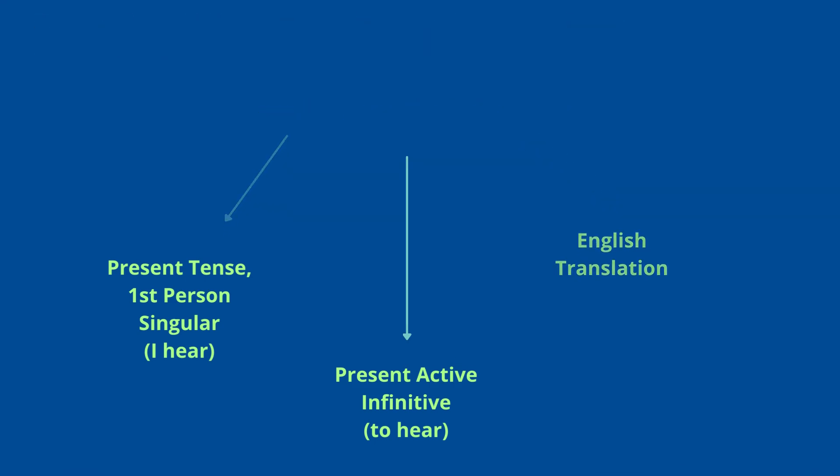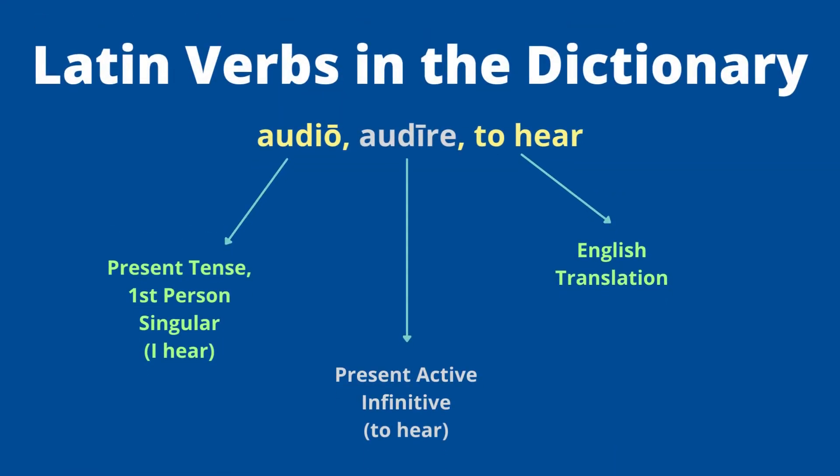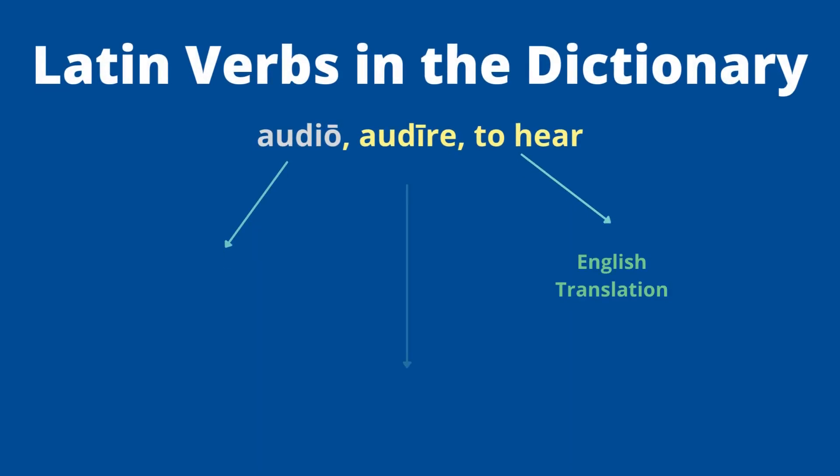'Audire,' the second piece, is the present active infinitive meaning 'to hear.' These are the pieces we need to get moving on the present tense. The first piece, 'audio,' is already in the present tense — it's first person singular — so 'audio' means 'I hear' or 'I am hearing.' We give you that first piece because sometimes the spelling is a little different from what you're anticipating.